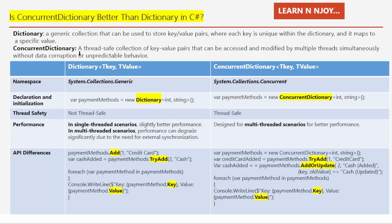Before we compare their performances, let's first discuss at a high level what Dictionary and ConcurrentDictionary are. Dictionary is a generic collection used to store key-value pairs where each key is unique and maps to a specific value. It is implemented as a hash table, which is very important to note — this provides fast access to values based on keys. When you add a key-value pair, it computes a hash code from the key to determine the storage location. Also, a dictionary key must be unique and should not be null for a reference type, while the value can be null.